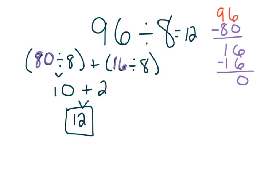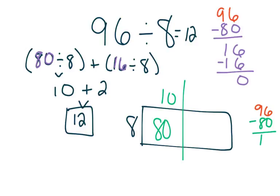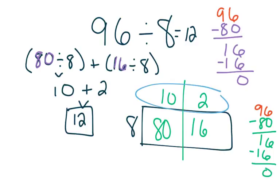I'm going to use my area model to check my work. I'm going to have my 8 on one side and my 96 off to the side for me to subtract, and I need to think about my 8 facts. I know that 8 times 10 gives me 80, so I'm going to subtract 80 from my whole and I'm left with 16. And then 8 times 2 gives me 16. I subtract 16 from my whole and I'm left with 0. Adding up what's on top of my rectangle: 10 plus 2 gives me 12. Either way, I have 12 as my quotient.